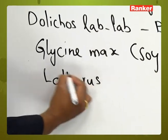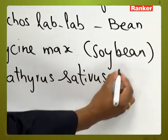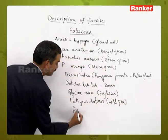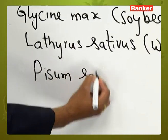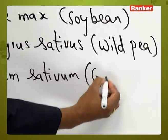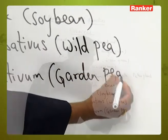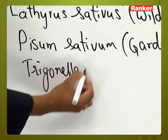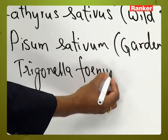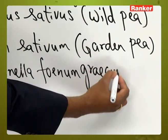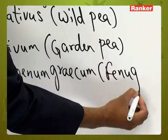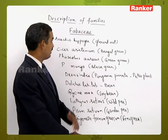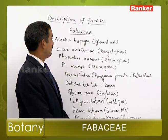Lathyrus sativus, commonly called as wild pea. Pisum sativum, common name is garden pea. Trigonella foenum-graecum, commonly called as fenugreek. Likewise, many important members are there in the Fabaceae family.